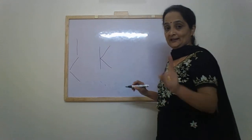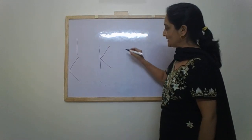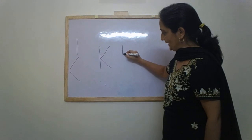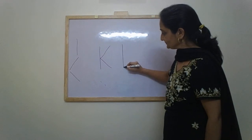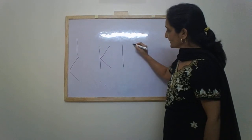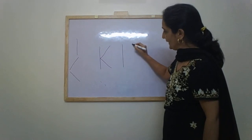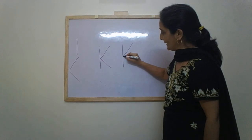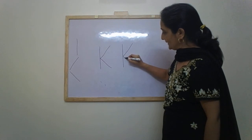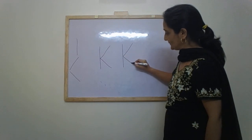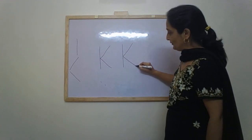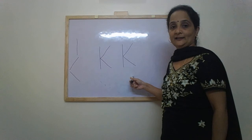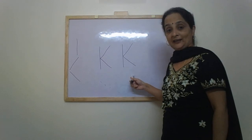Alright. Let's do it once again. A standing line. A slanting line that goes back and a slanting line that comes in the front. Letter K.